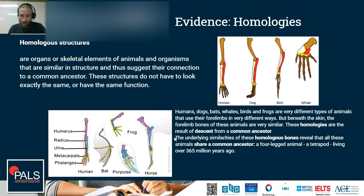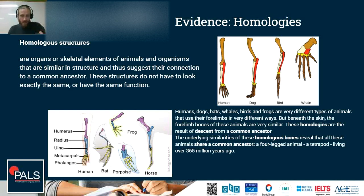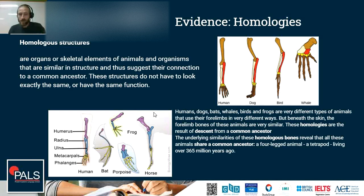If we go far enough back in time, all these species go back to a common ancestor — a four-legged animal, a so-called tetrapod, that lived around 365 million years ago. This organism probably had similar bones that we find in all these organisms today. This basic bone structure — the humerus, radius, ulna, metacarpals, and phalanges — is found in all of these animals, looking slightly different and being adapted to specific functions in their environment. This is very good evidence for common descent and common ancestry.